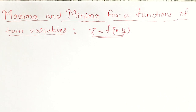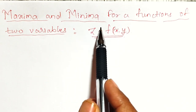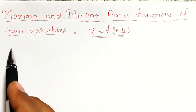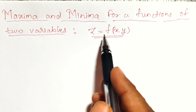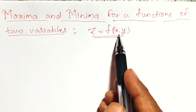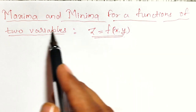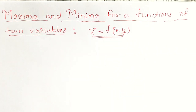Welcome friends. In this series of videos, I am going to discuss Maxima and Minima for functions of 2 variables. If z is equal to f of xy is a function of 2 variables, then how to find out the maximum point and minimum point and its maximum and minimum values.